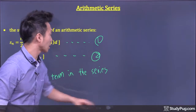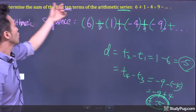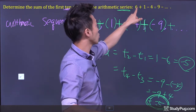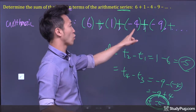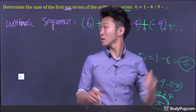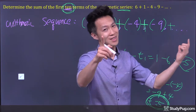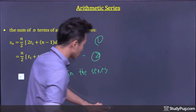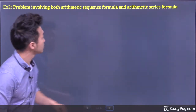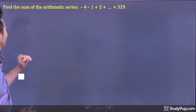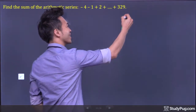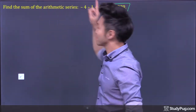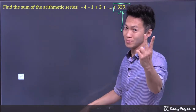For this question, they ask for the sum of the first 10 terms. The question only shows the first four terms — 6, 1, negative 4, negative 9 — and does not tell you the value of the last term, which is the 10th term. So we don't use formula number 2; we use formula number 1. In contrast, if a question does give you the last term, that's when you'd use formula number 2.